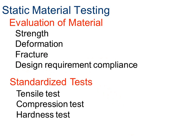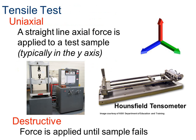We're going to mainly focus on the tensile test, and at the end we'll talk a little about compression and hardness. For a tensile test, we apply a straight line force to a test sample, typically in the y direction. You can see in this example we would place a sample of material in here and apply force in the y direction to try and pull it apart. It's called destructive testing if we apply the force until the sample fails, which is what we're going to practice.